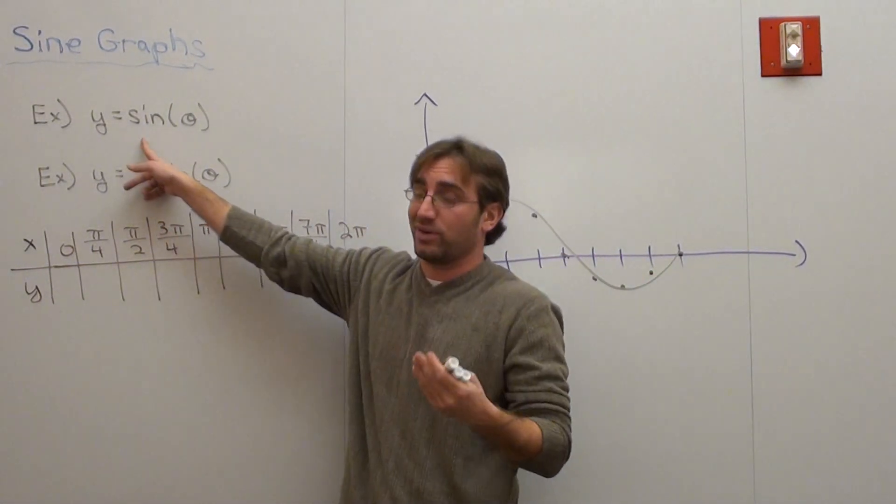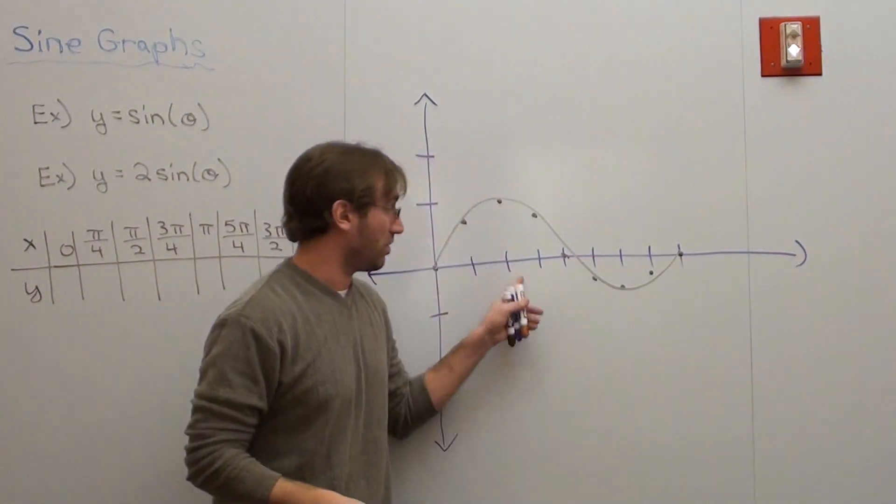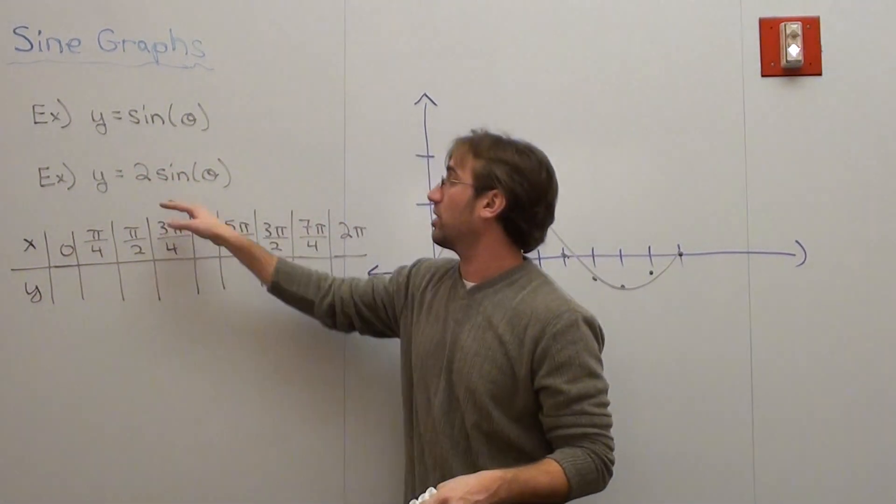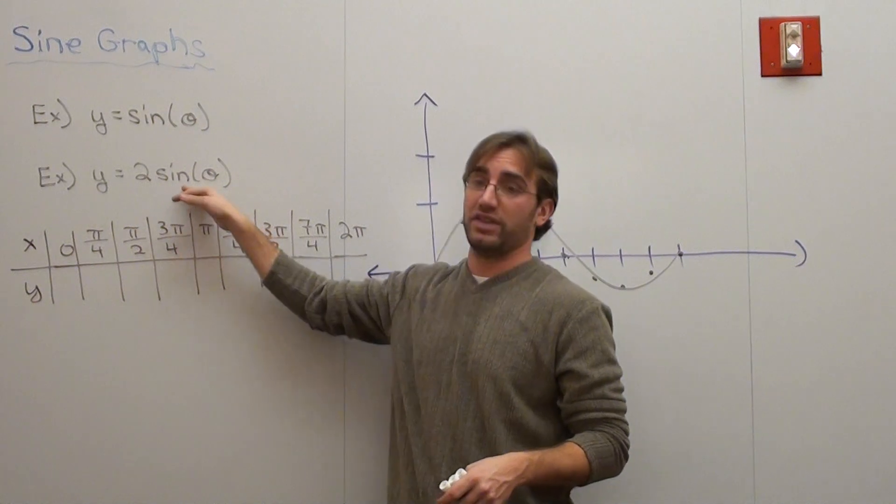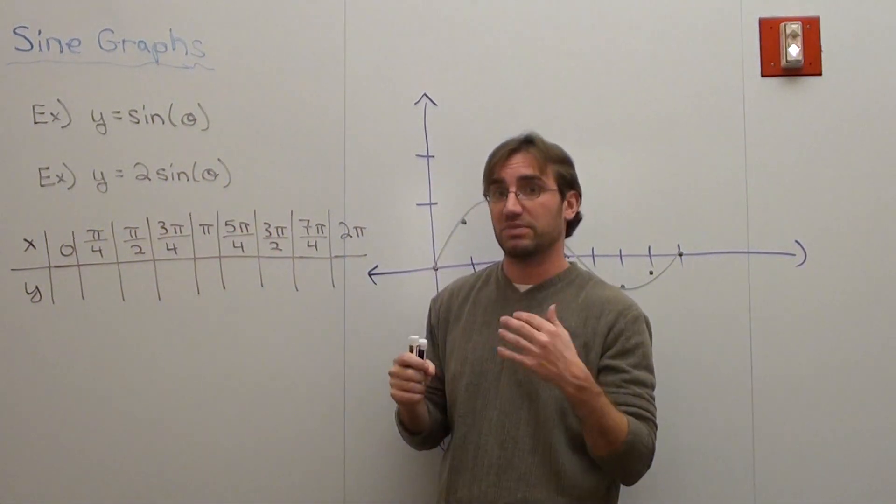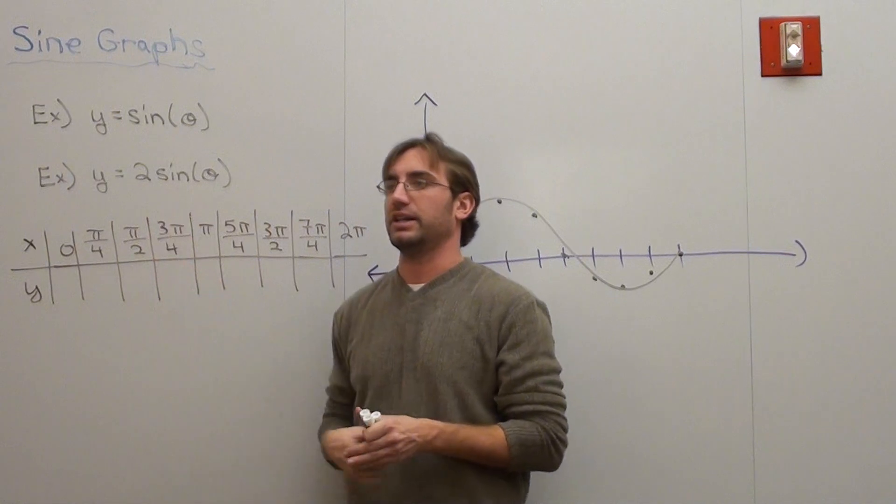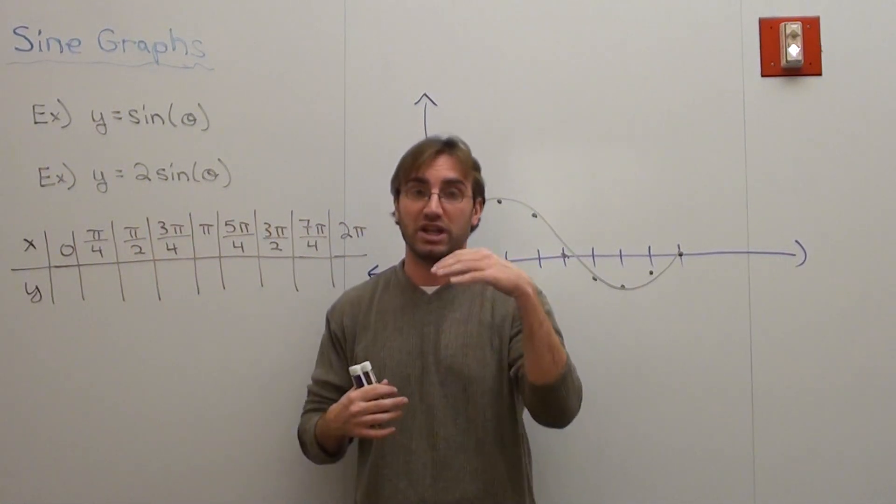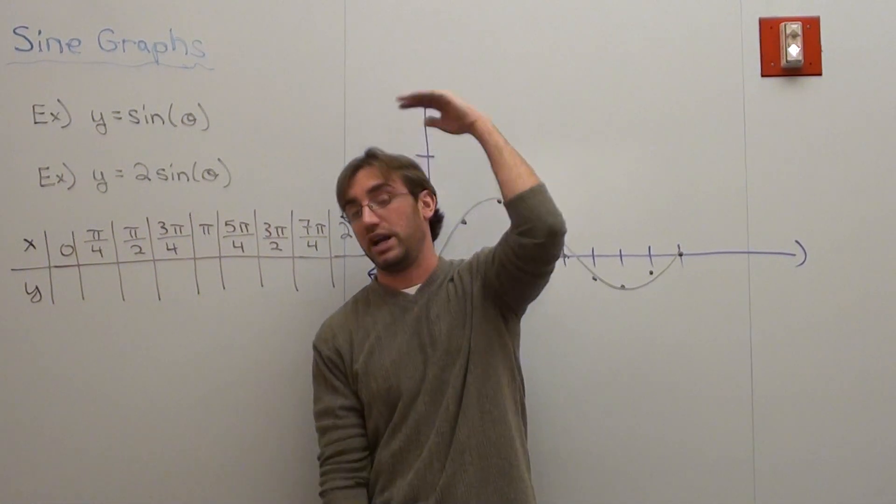I already graphed y equals sine of theta. That's this one right here. What I want to do now is graph y equals two sine of theta. Basically what I'm going to do is affect something called its amplitude. If I put a number in front of the sine, the graph is going to go higher and lower.